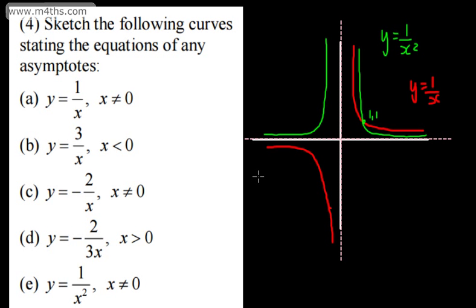That's a basic introduction to reciprocal functions. We won't go into rational functions here — that comes in a different unit. Hopefully you can now draw the graph of y = 1/x, understand why we have asymptotes, and understand that y can never equal 0 but tends to 0 as x gets very large in either direction.